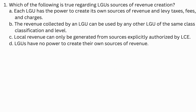Number 1. Which of the following is true regarding LGUs' sources of revenue creation? a. Each LGU has the power to create its own sources of revenue and levy taxes, fees, and charges. b. The revenue collected by an LGU can be used by any other LGU of the same class, classification, and level. c. Local revenue can only be generated from sources explicitly authorized by the local chief executive. d. LGUs have no power to create their own sources of revenue.